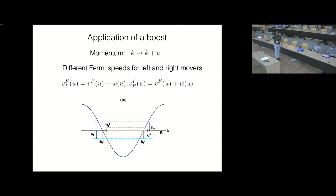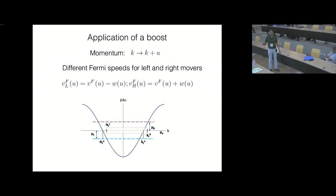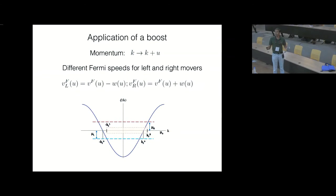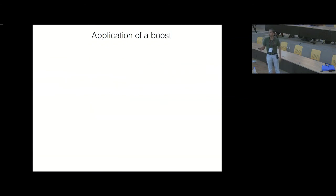So the Fermi points shift asymmetrically — if u is positive, this Fermi point moves toward 0 and the other moves away from 0. Consequently, in principle you will also have different Fermi speeds for the left movers and right movers, because you can calculate the derivative of the e-versus-k dispersion at each Fermi point. So even if the dispersion is symmetric, when you have a boost you can have different speeds for the left movers and right movers — and this will be important.